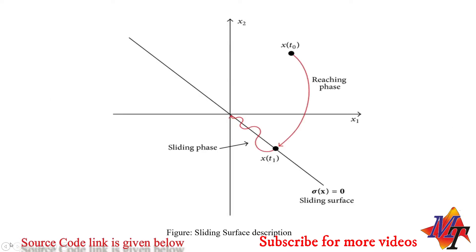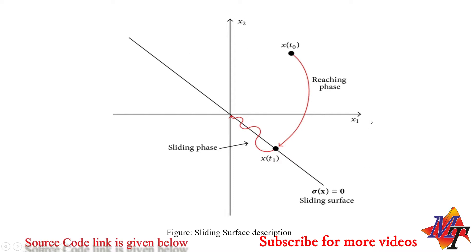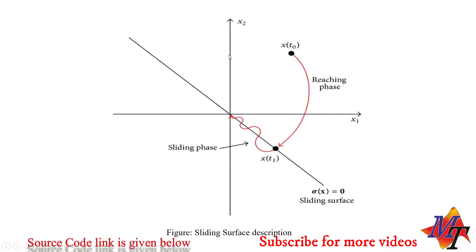I would like to explain this sliding mode control strategy with this diagram. Here x2 is a system state, x1 is a system state, and this line is a sliding surface which is a combination of both system states. This whole sliding mode control technique is divided into two phases: the reaching phase and the sliding phase.